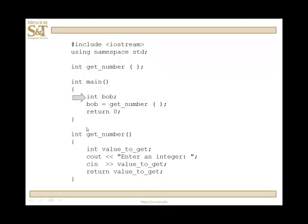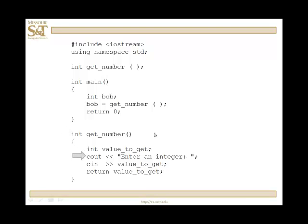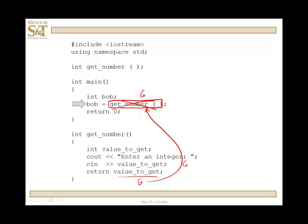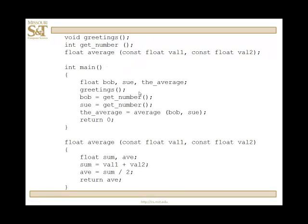Let's go through the execution. We start with main, create Bob, and Bob is assigned by getNumber. Control passes down to that function — no parameters need to be copied. We declare value_to_get, prompt the user, input a value, and return that value back up to the function call. I like to think of a function call that returns a value as a box. Suppose somebody enters 6 — value_to_get is 6, that's sent back up to the box, and what used to be the function call is now the number 6, which gets assigned to Bob. We hit return 0 and that's the end of that function.